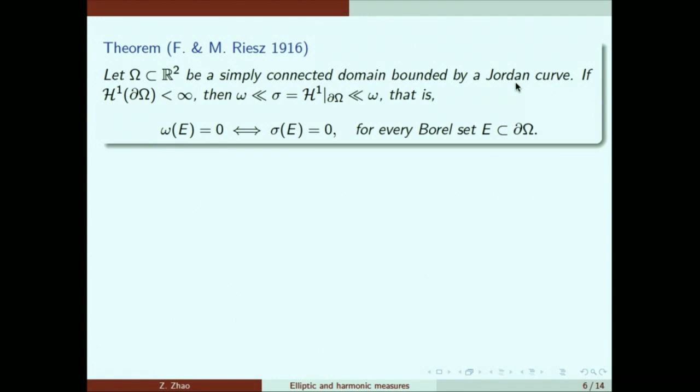Suppose we're in a plane, and for a simply connected domain bounded by a curve with finite curve length, the harmonic measure and this curve length has this nice absolute continuity relationship, which just means that a boundary set has zero curve length if and only if it's not seen by the Brownian traveler.